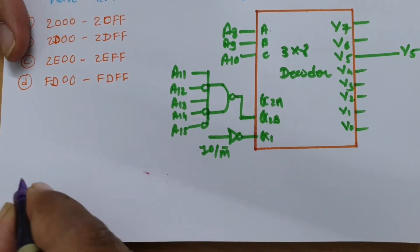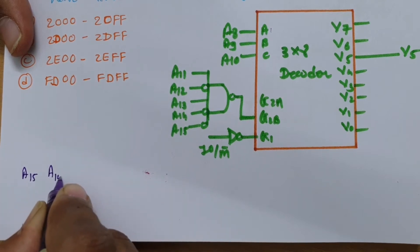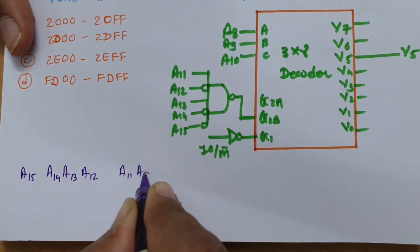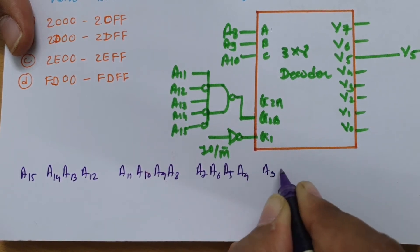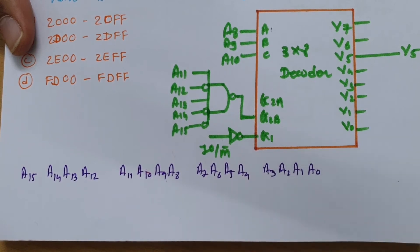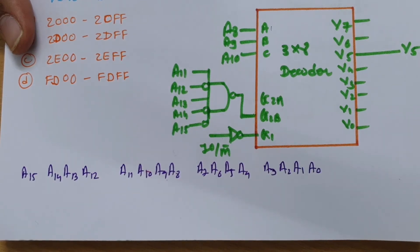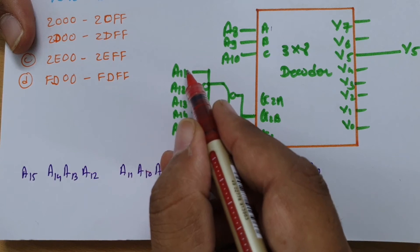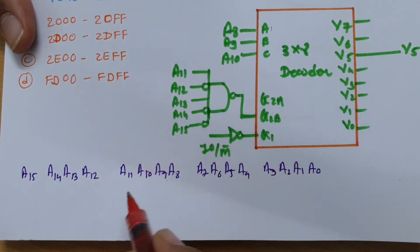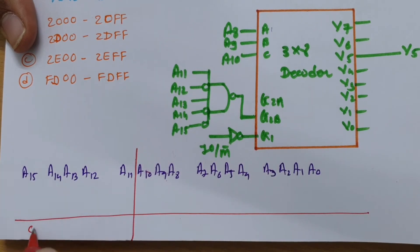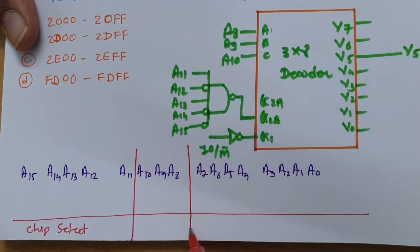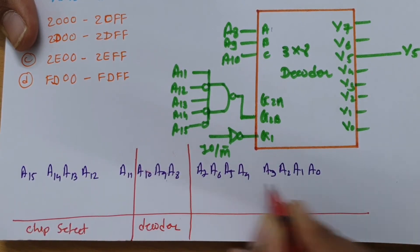We have 16 address lines total. Let me write them out: A15, A14, A13, A12, A11, A10, A9, A8, A7, A6, A5, A4, A3, A2, A1, A0. Lines A0 to A7 are for addressing, A8, A9, and A10 are connected to the decoder for decoding, and A11 through A15 are for the chip select of the decoder.